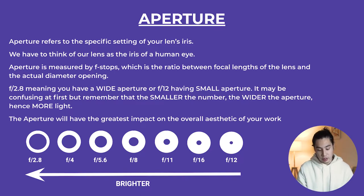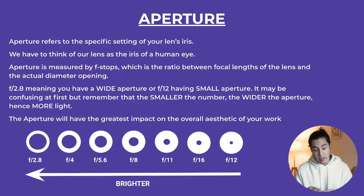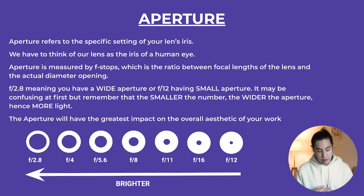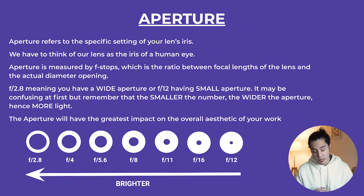That f-stop scale you see in the diagram is measured at the bottom of the screen. You don't really have to understand how the formula works, but aperture is very important. For example, f2.8 means, as you can see on the far left of the scale, you have a wide aperture. Or f12 means you have a small aperture, as you can see in this diagram. It may be confusing at first.